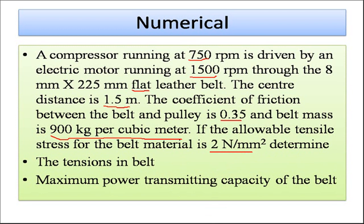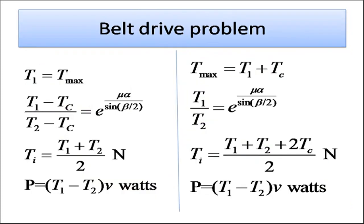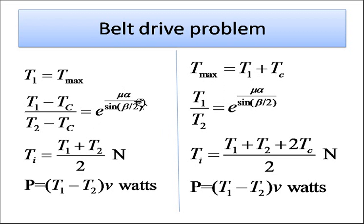If you refer to different books, this type of belt problem is solved in two different ways. In the first approach, the belt tension ratio is (T1 − Tc) / (T2 − Tc) = e^(μα) for flat belt, or e^(μα / sin(β/2)) for V-belt. Here T1 is considered as T_max, initial tension = (T1 + T2) / 2, and power = (T1 − T2) × v. Tight side tension is T1 and slack side is T2.